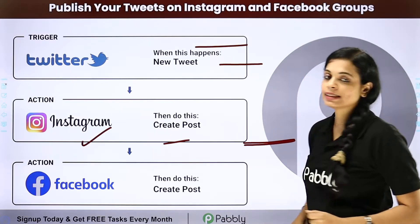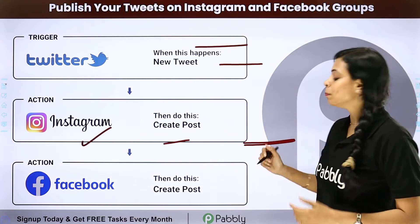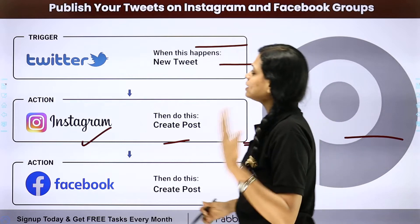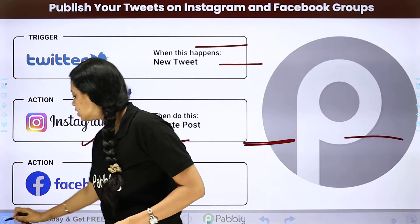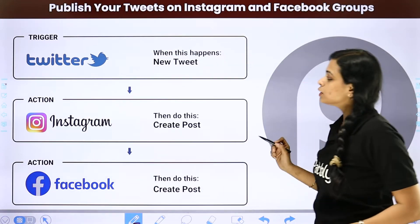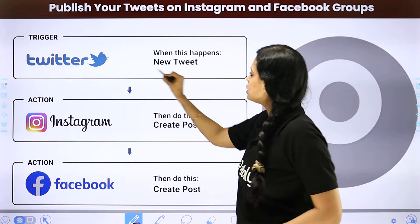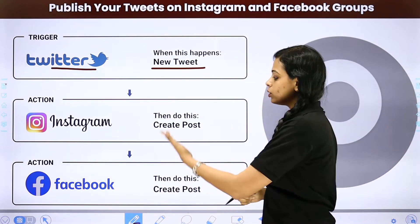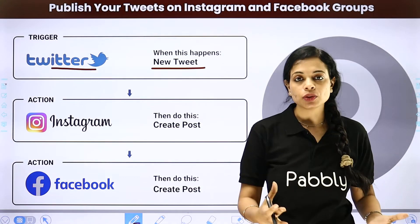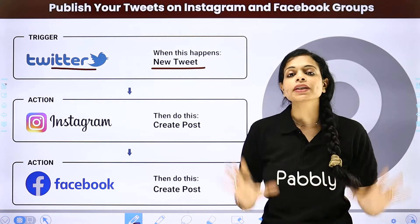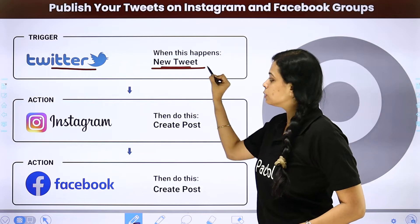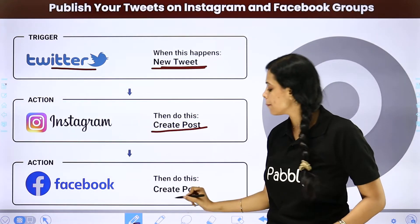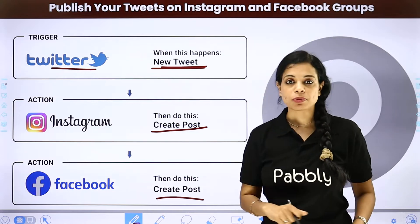Let's move on to our next setup. How can you publish your tweets on Instagram and Facebook groups? Not only Instagram or Facebook — you can choose any other social media platform. Every time a new tweet is posted on Twitter, instead of posting the same thing on Instagram or Facebook or Pinterest, you are automating the process. The moment it is posted on Twitter, automatically the same post would be created on Instagram and then on Facebook.